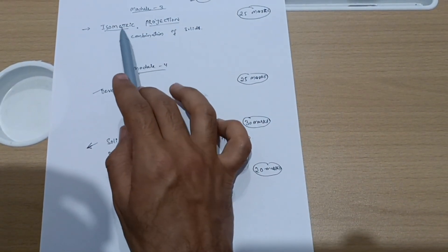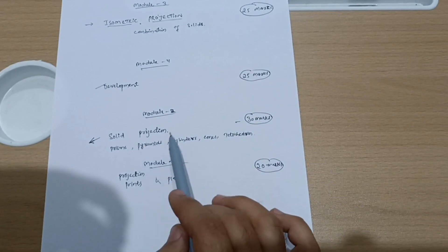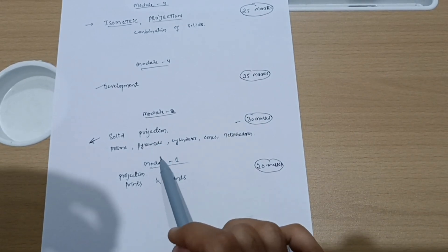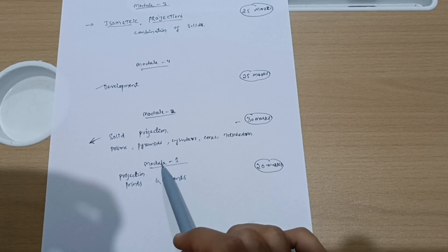Last is Module 1 if you are convenient. This is for passing only. If you just want to pass, then isometric projection, development, and solid projection is enough. But if somebody wants to score more than 90, they should definitely go for Module 1 and they can score more than 90 marks.